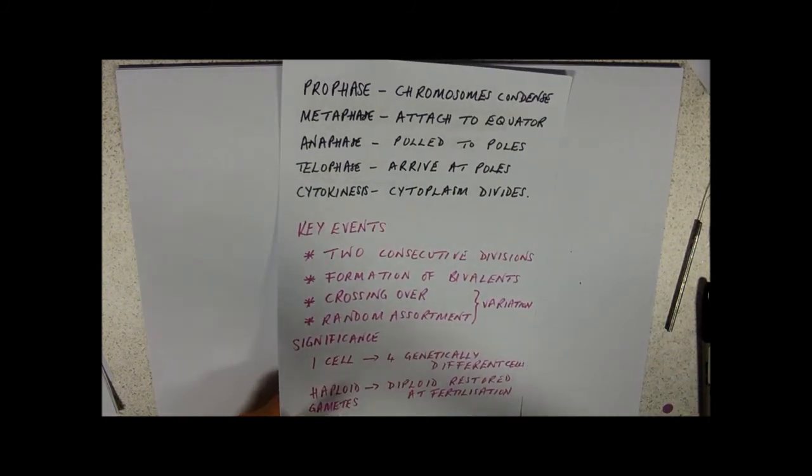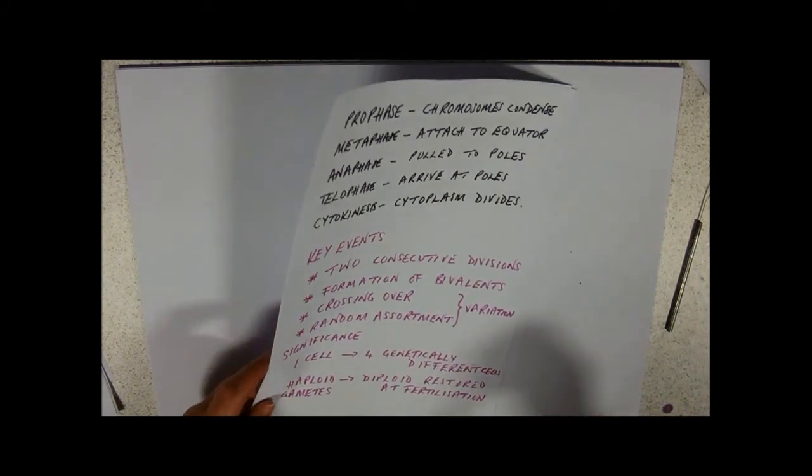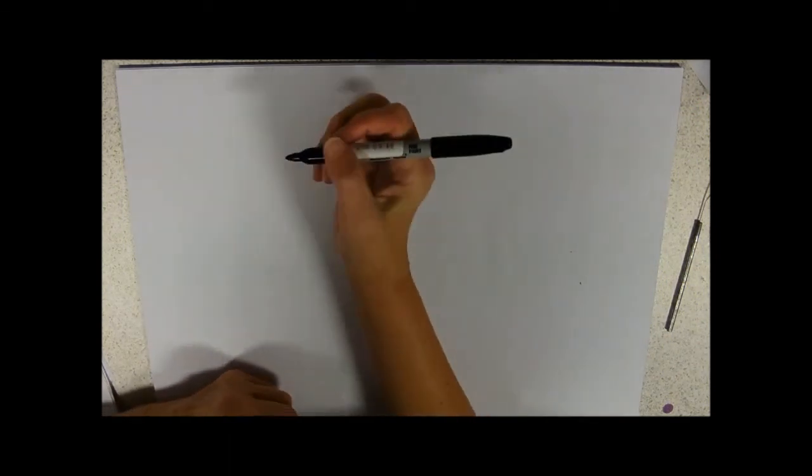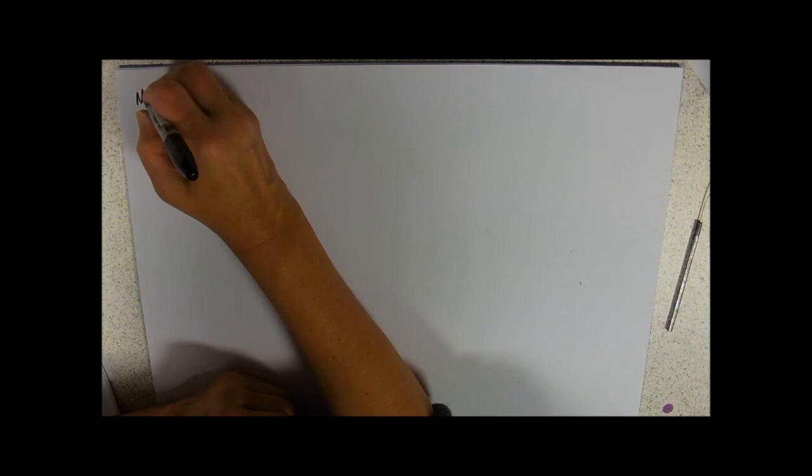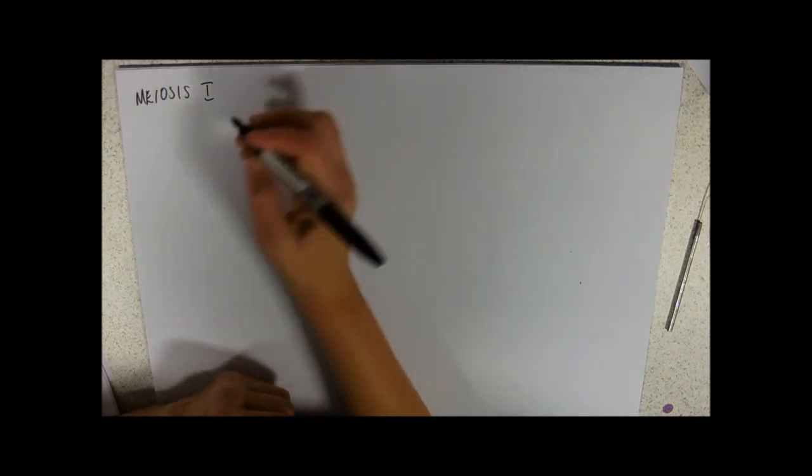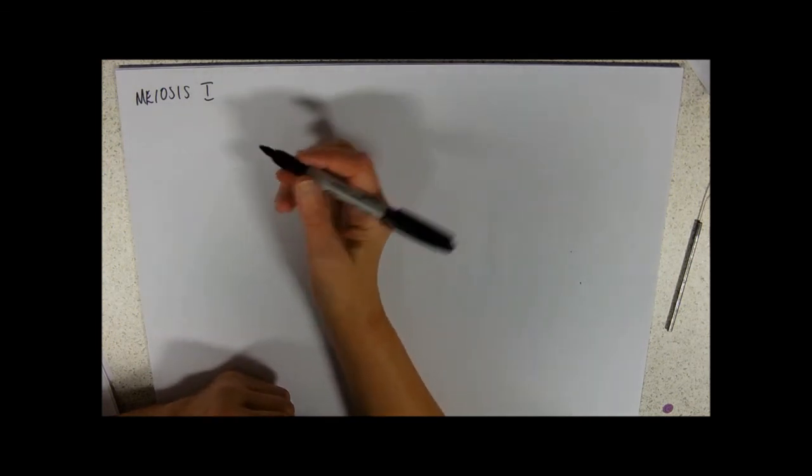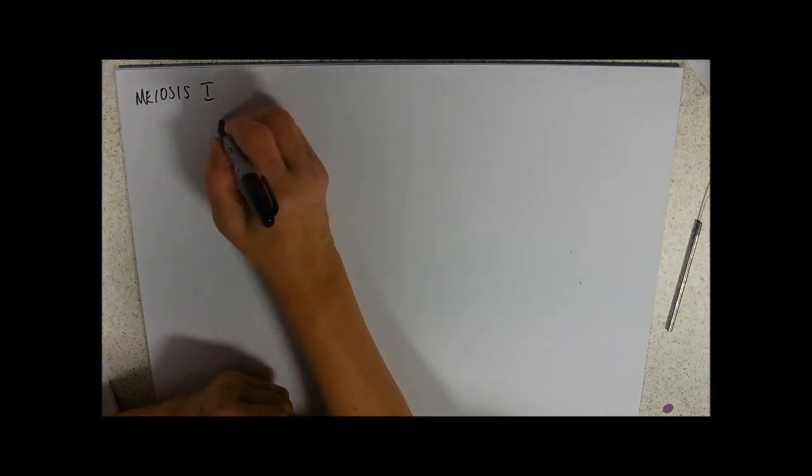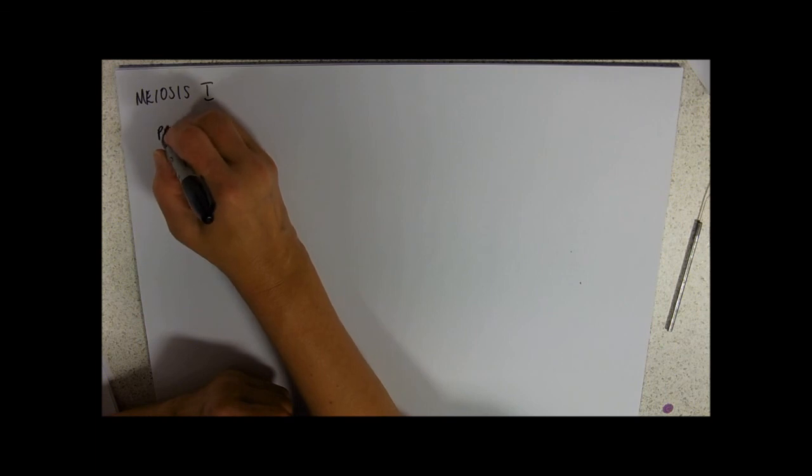So, I don't particularly want to spend my next half hour drawing cells. I think we'll just do a couple of the phases. We'll do the first division, perhaps, and then sort of shortcut some second divisions. So, we call our divisions Meiosis I and Meiosis II. Meiosis I is the first. That makes sense. And the first event, we're going to start with prophase.